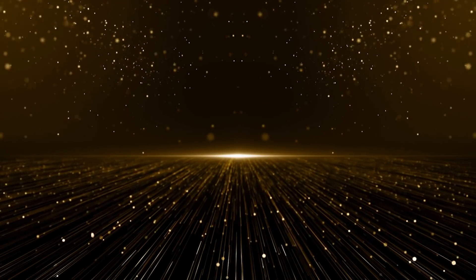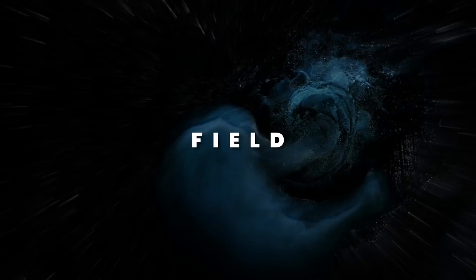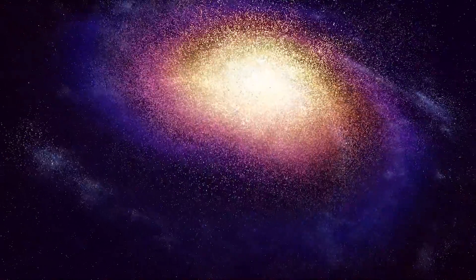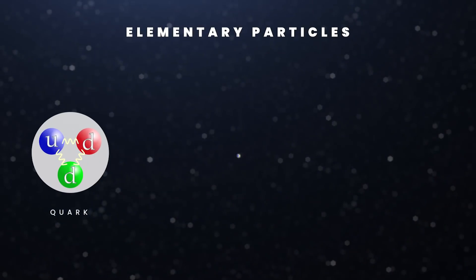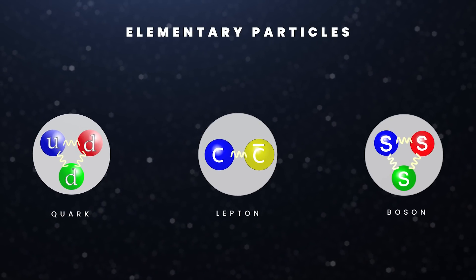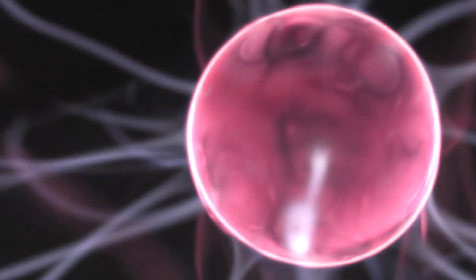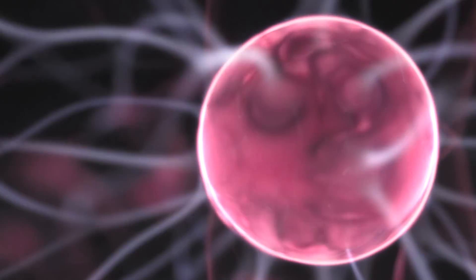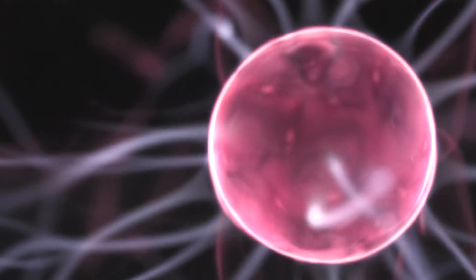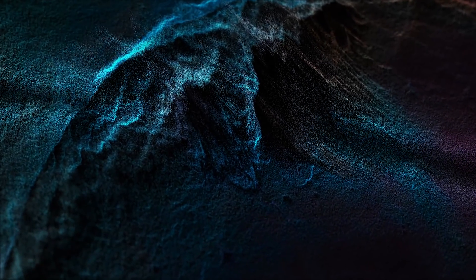One big misconception is that the primary object in physics is a particle. In reality, it's the field, the fundamental building block of the universe. Quarks, leptons, and bosons are elementary particles. Everything in our universe is made of them, and every elementary particle has its field.